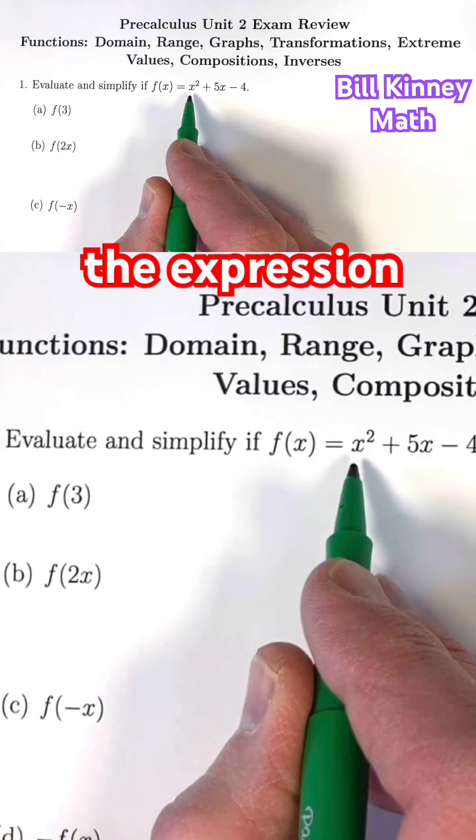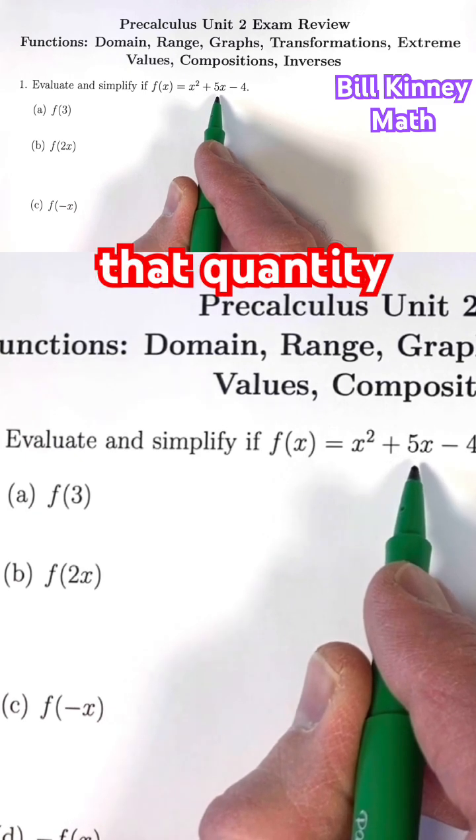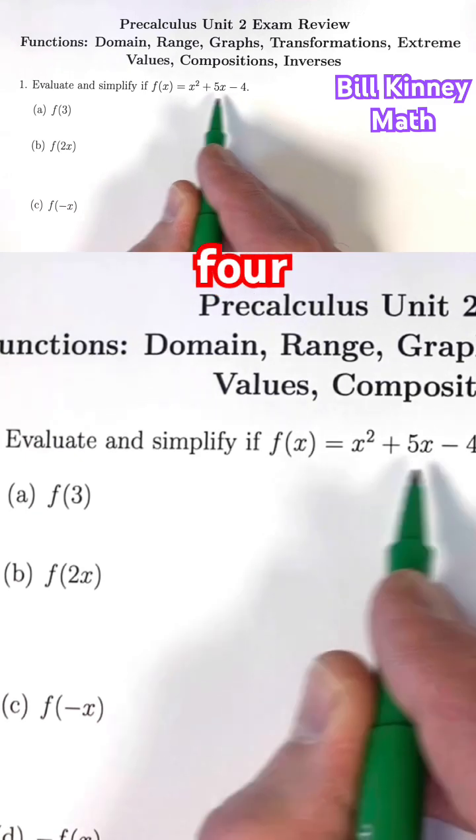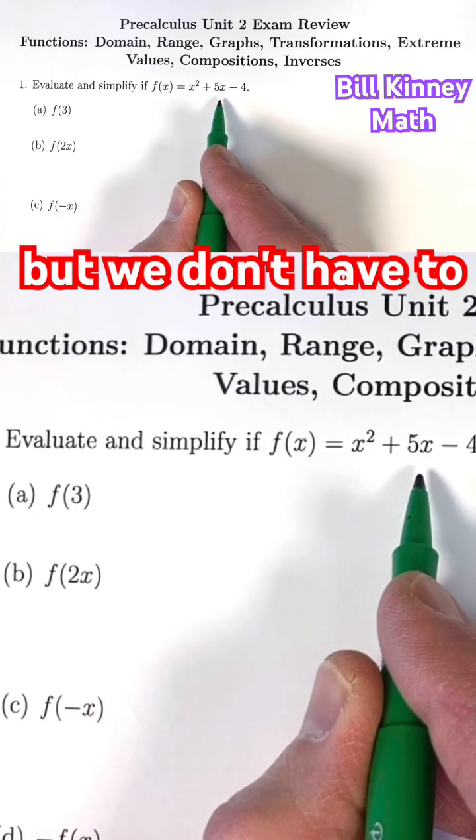We need to take the expression x, square it, then add 5 times that quantity, and then subtract 4. We could call this value y, but we don't have to.